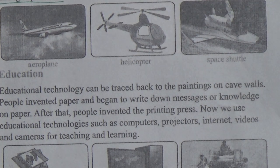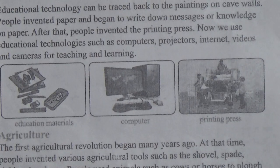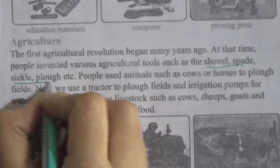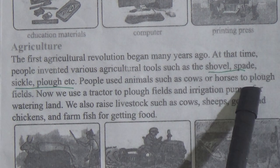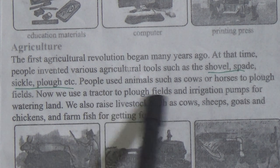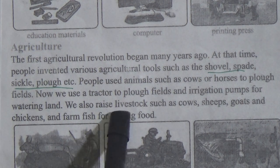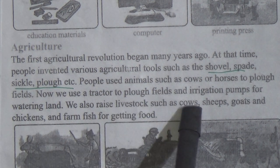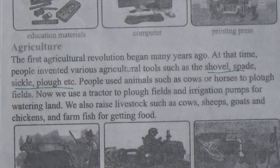Here is agriculture. The first agricultural revolution began many years ago. At that time, people invented various agricultural tools such as shovels, rakes, sickles, plows etc. People used animals such as cows or horses to plow fields. Now we use a tractor to plow fields and irrigate farms for watering land. We also raise livestock such as cows, sheep, goats and chickens, and farm fish for getting food.